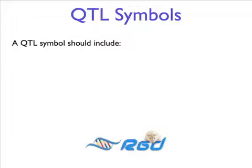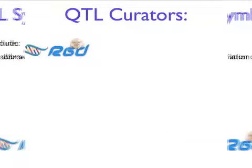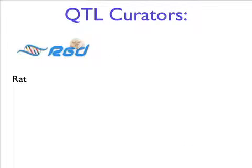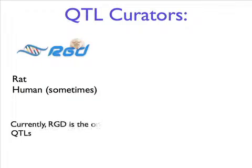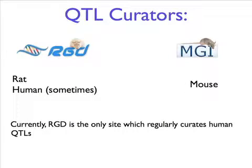These guidelines say that a QTL symbol should have a stem consisting of an abbreviation of the name, followed by a serial number. RGD curates all rat QTLs. RGD also curates human QTLs based on specific projects. Mouse QTLs are imported from the Mouse Genome Informatics MGI group at the Jackson Lab.